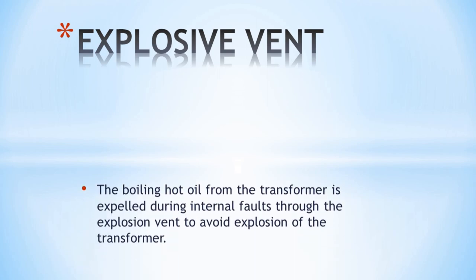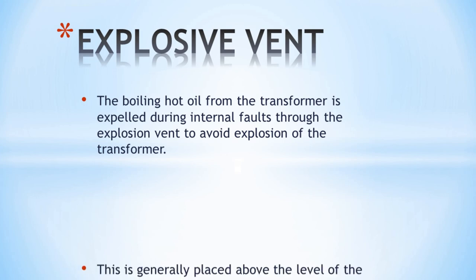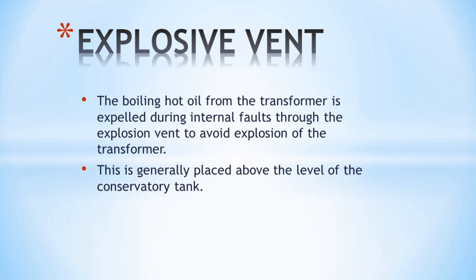The last part is the explosion vent. When there is an internal fault in the transformer, the temperature rises and pressure builds up. The boiling hot oil from the transformer is expelled during internal faults through the explosion vent to avoid an explosion of the transformer. This is a safety device and is generally placed above the level of the conservator tank.